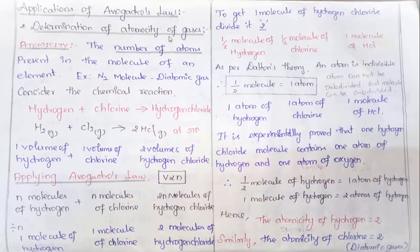What is atomicity? The number of atoms present in the molecule of an element is called atomicity. For example, the N2 molecule — the nitrogen molecule — contains two atoms in it. So N2 means two atoms of nitrogen make up the nitrogen molecule. Two atoms are present in one molecule of nitrogen, so the atomicity is two, otherwise called a diatomic gas. That's what we're going to prove: whether a given element forms a diatomic or triatomic molecule.